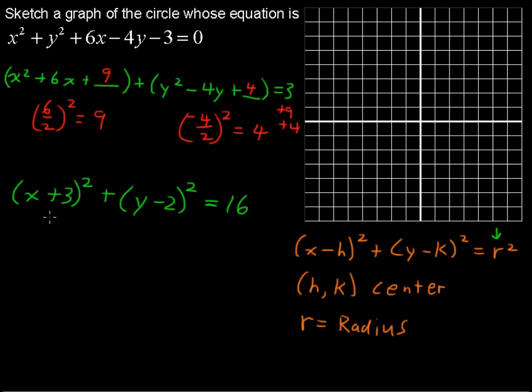So we get, aha, x minus h, but this is x plus 3. Well, we can fix that. x minus negative 3. That's the same thing. x minus negative 3 is the same as x plus 3. And certainly when you're doing this work at home, you don't have to write that extra step, but I'm doing that for teaching purposes. So we can see that that h value is negative 3. And I'm going to write this as 4 squared, so we've got our r there.